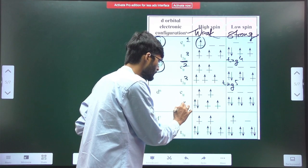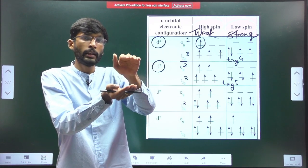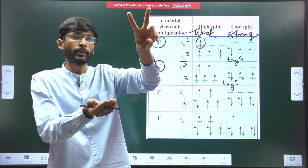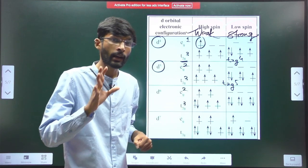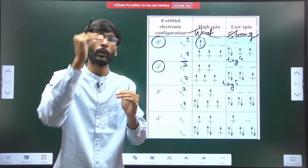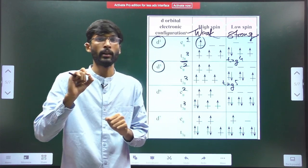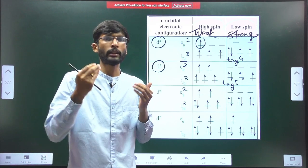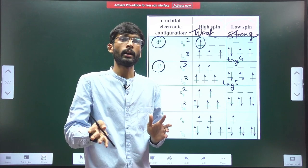For d6, we have six electrons. Six electrons have to adjust. With weak field, first three go to t2g, then two to eg, giving t2g4 eg2. With strong field, because gap is more, electrons will prefer lower energy. Configuration becomes t2g6.